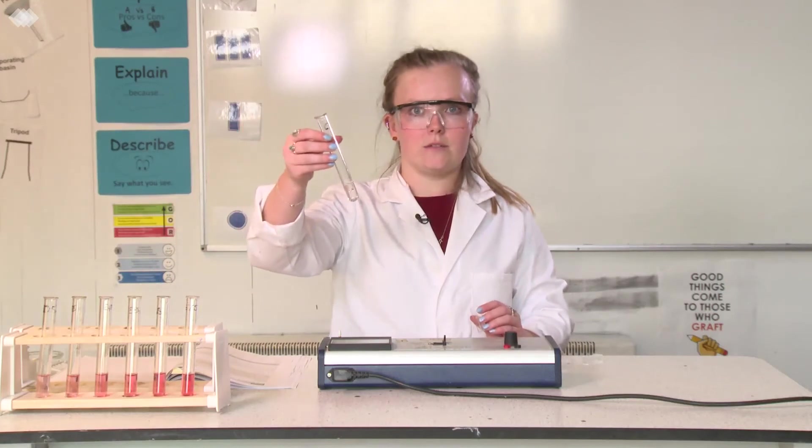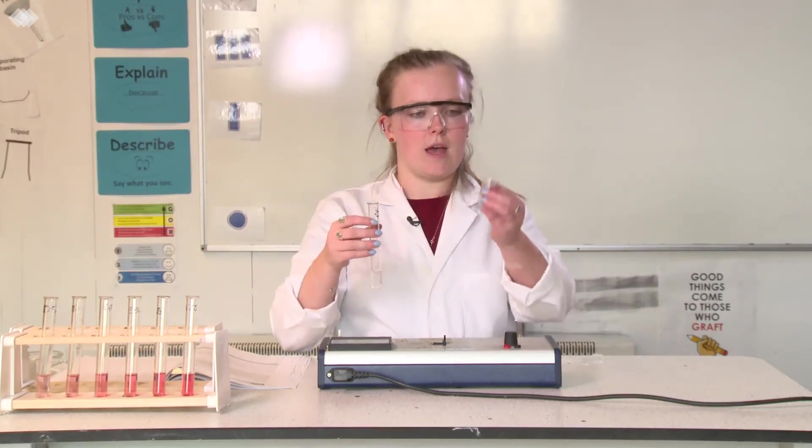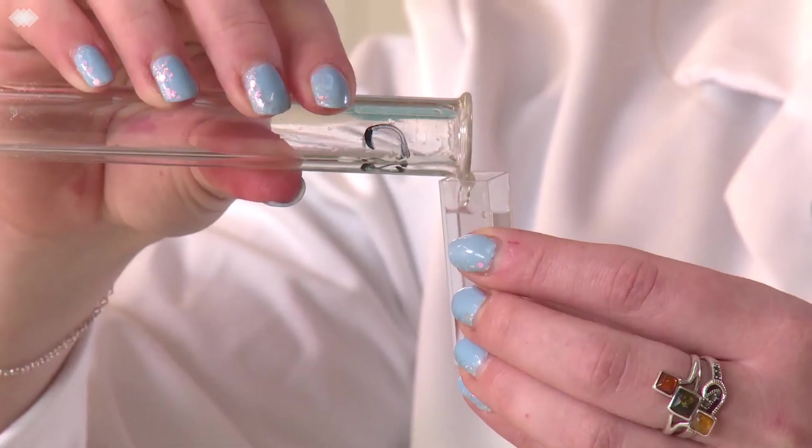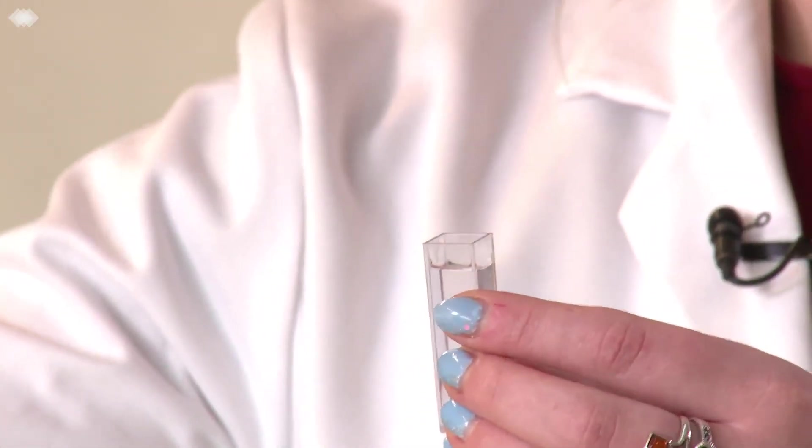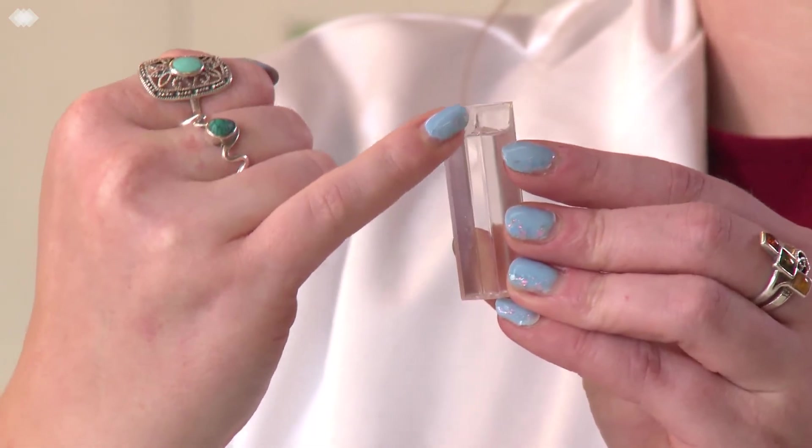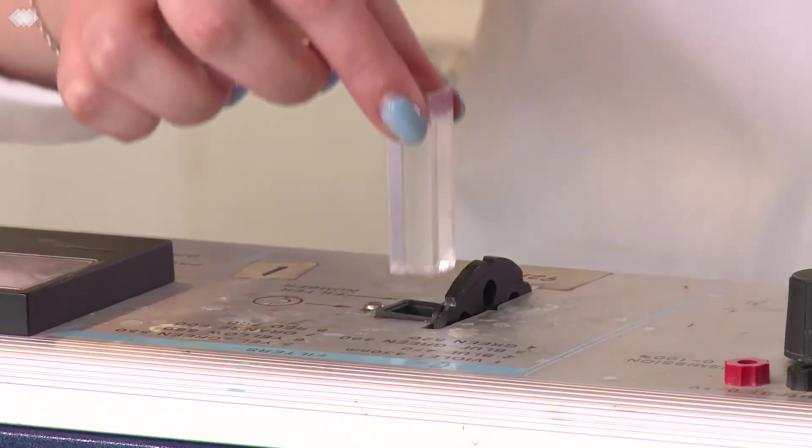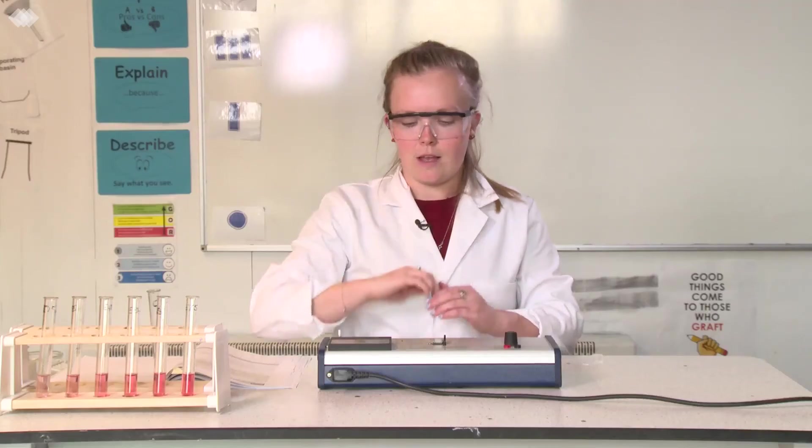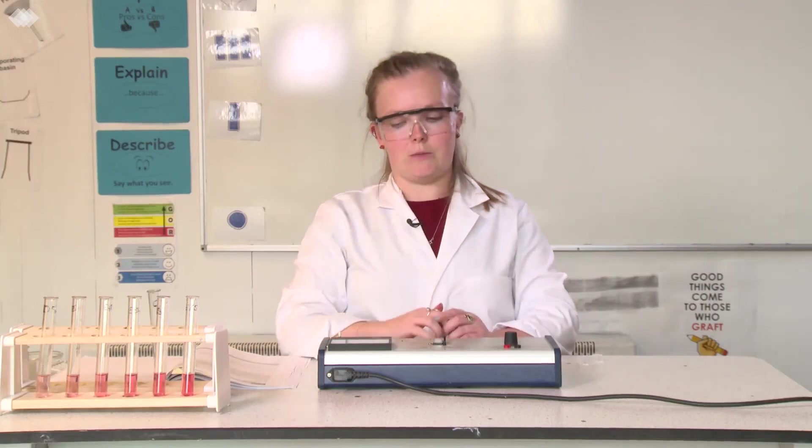Okay, so we'll start with our control test tube. And you're going to pour that into the cuvette. The cuvette has an arrow demonstrating which side should be in line with the light source in the colorimeter. Place the cuvette into the colorimeter. That shows zero absorbance.